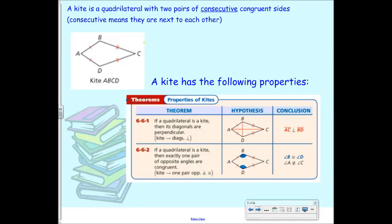How is this different than a parallelogram? All sides aren't equal — that's true. But in a parallelogram, the opposite sides were congruent, and that's not true here. Also, opposite sides in a kite are not parallel. Because if you kept going with AB and kept going with DC, ultimately they would cross each other at some point. So they're not parallel to each other. So that's kite ABCD.